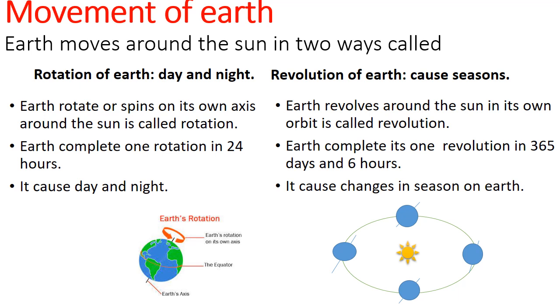Rotation: Earth rotates or spins on its own axis, this is called rotation. Revolution: Earth revolves around the sun in its own orbit, this is called revolution.